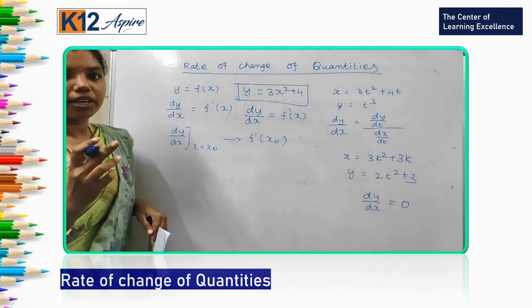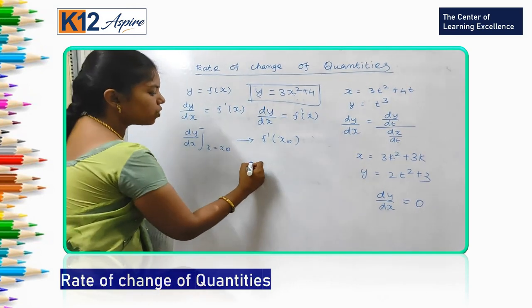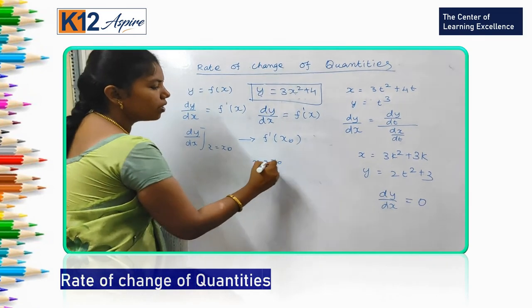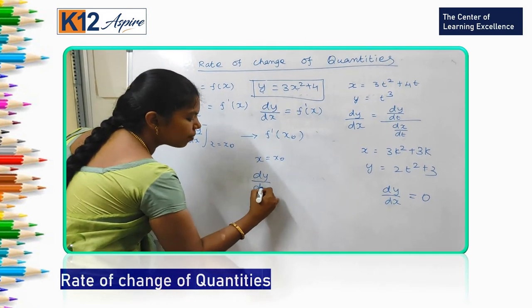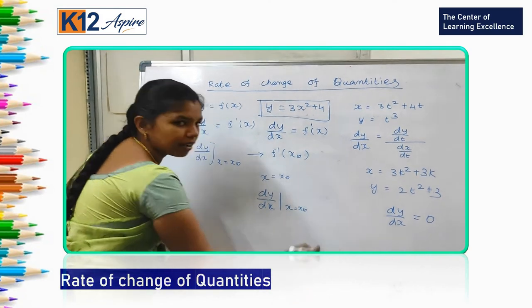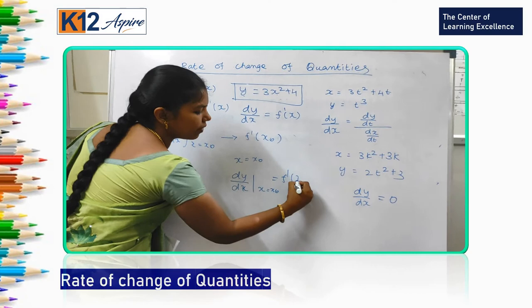In a particular point, like I said before rate of change of quantity in particular point, that means x equal to x naught. That is how we can write dy by dx and x equal to x naught. This we can write as f dash of x naught.